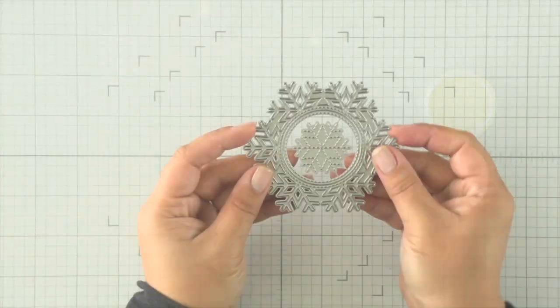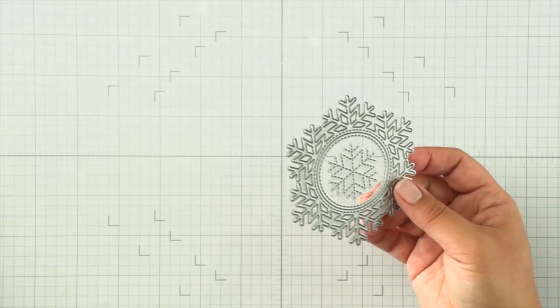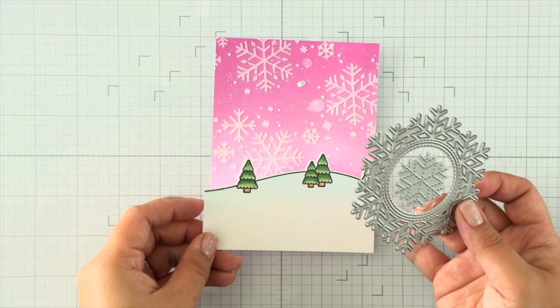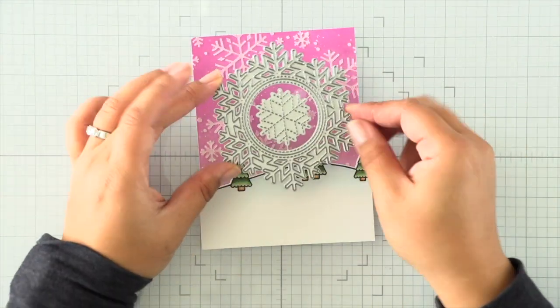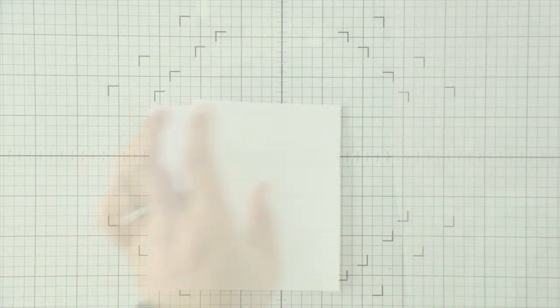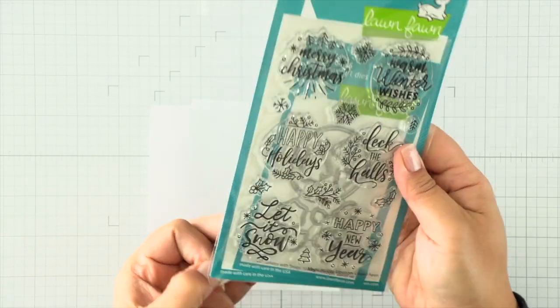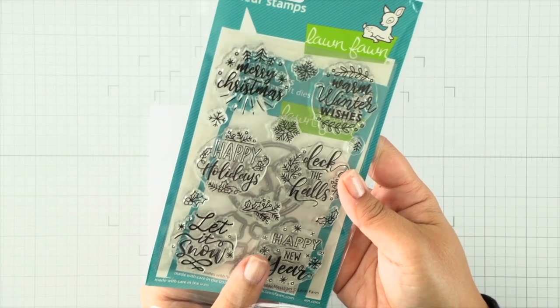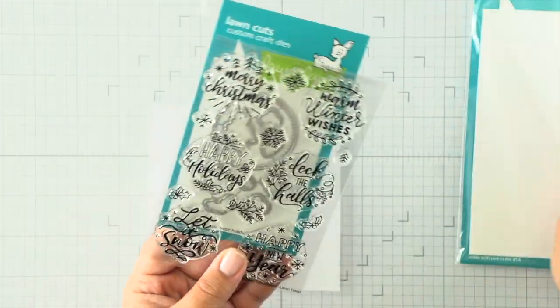I'm going to set that aside and clean up my work surface. Then we can work on the next element, which is this magic iris snowflake. I'm going to pull in my background elements just so I can eyeball how much space I need for my snowflake. I'm cutting some pearlescent vellum.